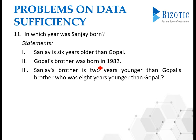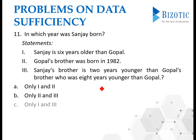Statement 2: Gopal's brother was born in 1982. Statement 3: Sanjay's brother is two years younger than Gopal's brother, who was eight years younger than Gopal. So you have three statements. Your job is to decide which statements are sufficient to find in which year Sanjay was born — whether it is statements 1 and 2, 1 and 3, or all three.